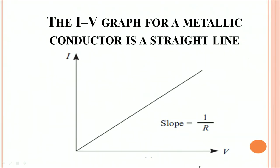If you plot a graph between V and I, the potential difference applied and the current which flows, then you can find that for a metallic conductor it is a straight line, and obviously the slope will give you the value of 1 upon R.